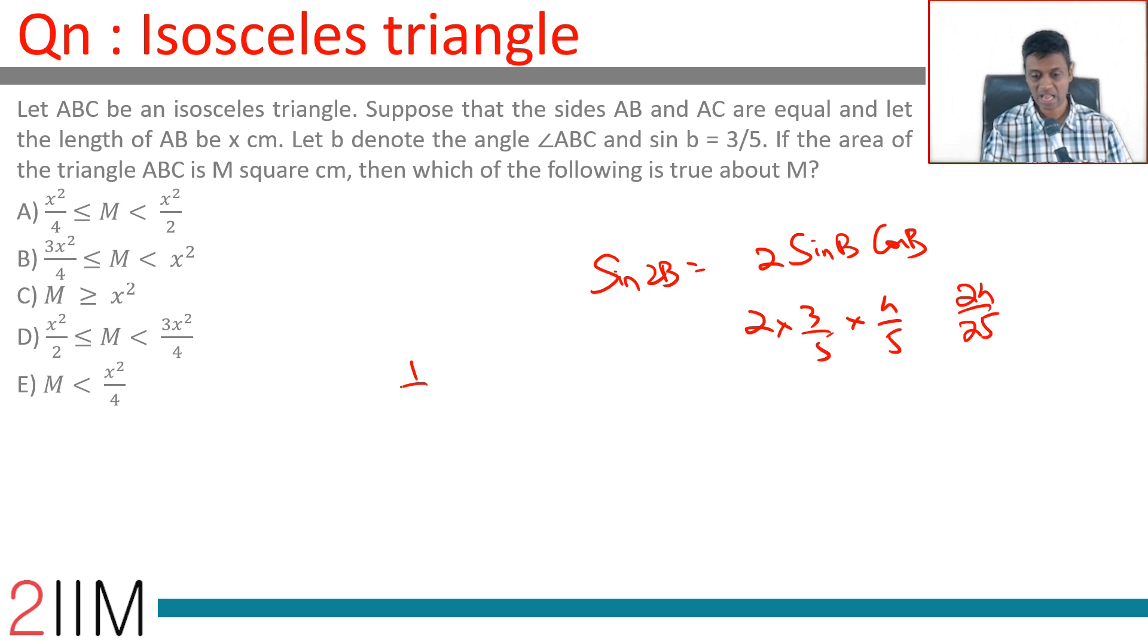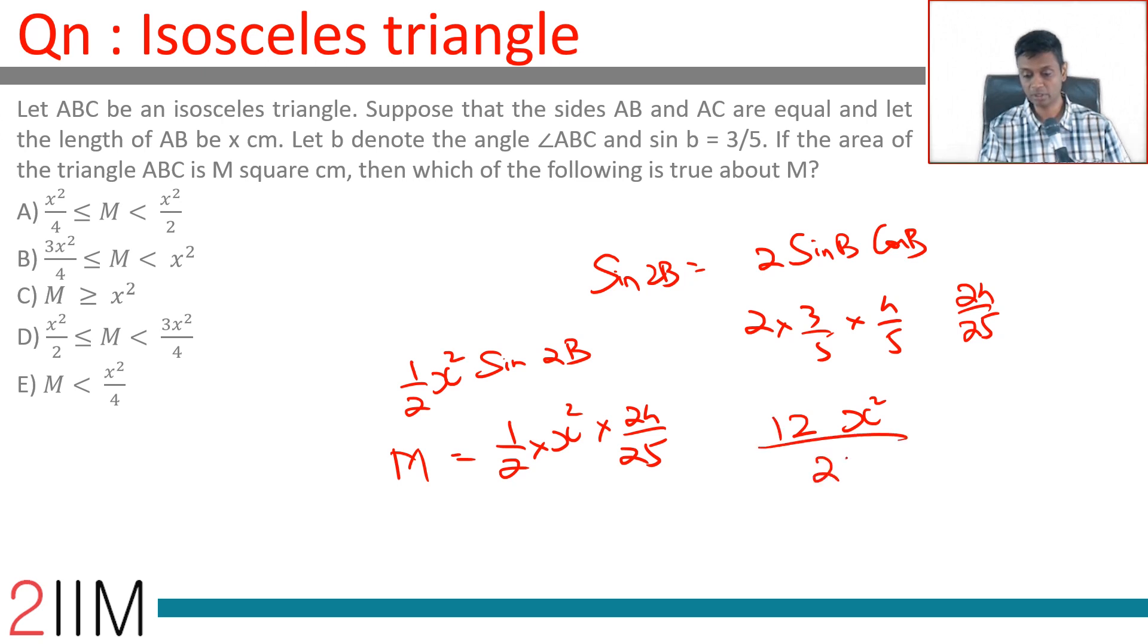Area half X square sin 2B which is half into X square into 24 by 25. This is M. M equals 24 or 12 X square by 25.